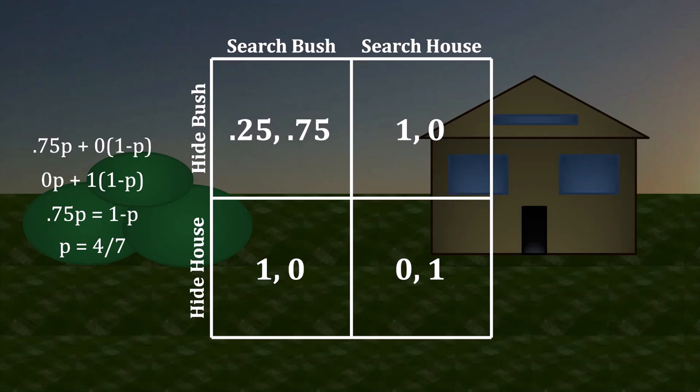Consequently, to answer the first half of the puzzle: with camouflage, you are now more inclined to hide behind the bush. That's intuitive — after all, the camouflage is helping you not be spotted when you choose to hide there.